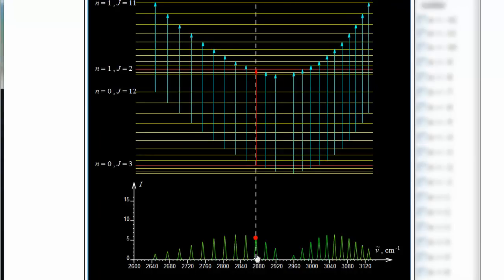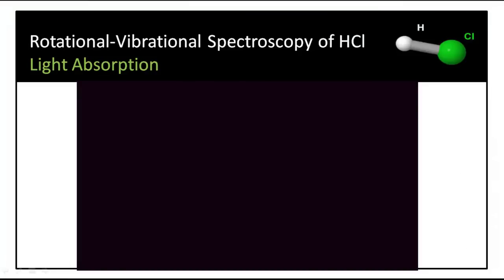So the peaks to the right of the central point arise from an increase of 1 from the rotational levels in the ground vibrational level and the upper level. You can now see that the peaks to the left lower energy level arise from a decrease in the value of J by 1. It is this which gives rise to our observed experimental rotational vibrational spectrum of HCl.